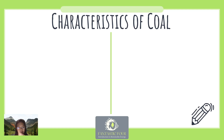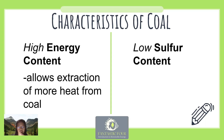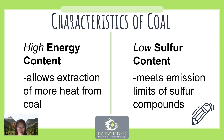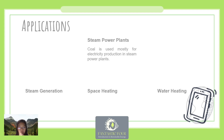The important characteristics of coal are energy content and sulfur content. High energy content allows extraction of more heat, making the fuel more valuable. Low sulfur content is necessary to meet emission limits as dictated by governing regulations. Coal is most popularly used to provide electricity in steam power plants, and can also be used in steam generation, space heating, and water heating.